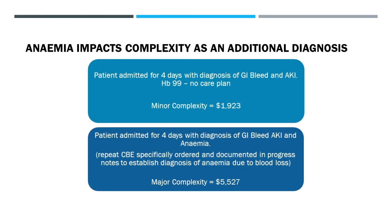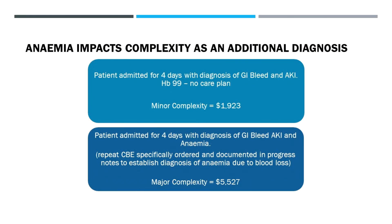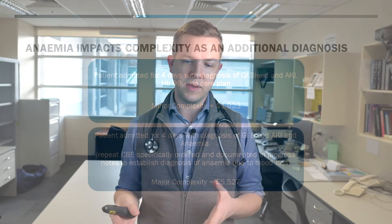Here's anaemia as an additional diagnosis rather than the principal one. A patient admitted for four days with a GI bleed and acute kidney injury, haemoglobin of 99, and no specific plan around the anaemia — just focus on the bleed — gets minor complexity at about two thousand dollars. Compare that to someone with exactly the same issue where it's specified that a repeat FBC was ordered to establish the diagnosis of anaemia due to blood loss. That suddenly adds complexity, and you're getting two and a half times the funding at five thousand five hundred dollars. That's a big difference.